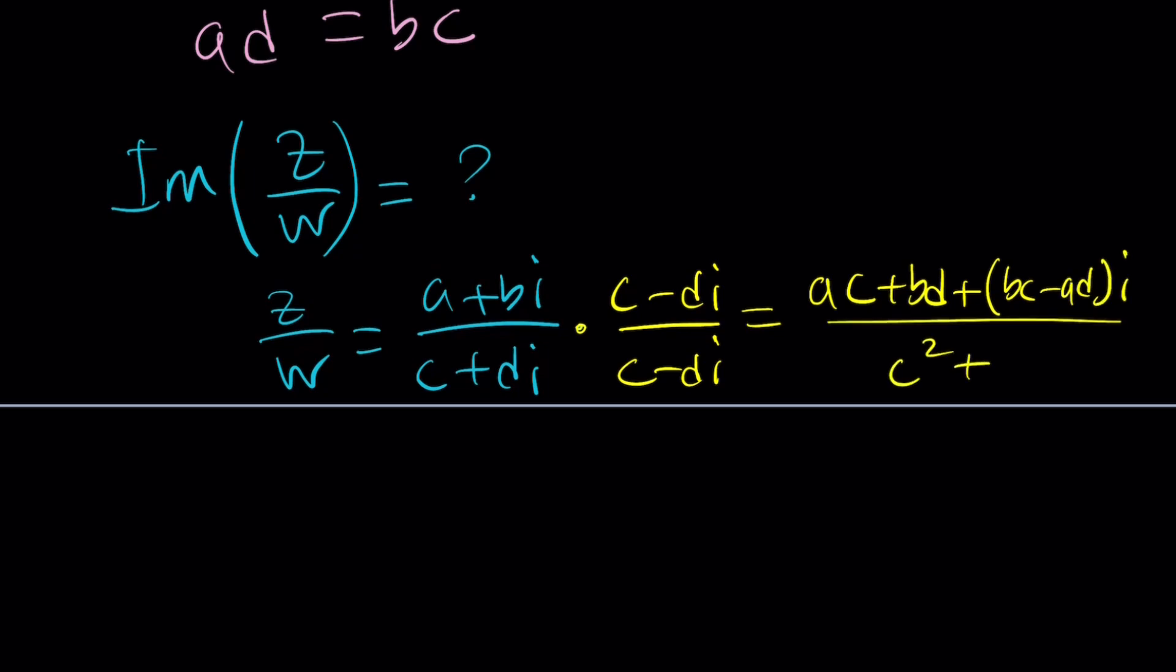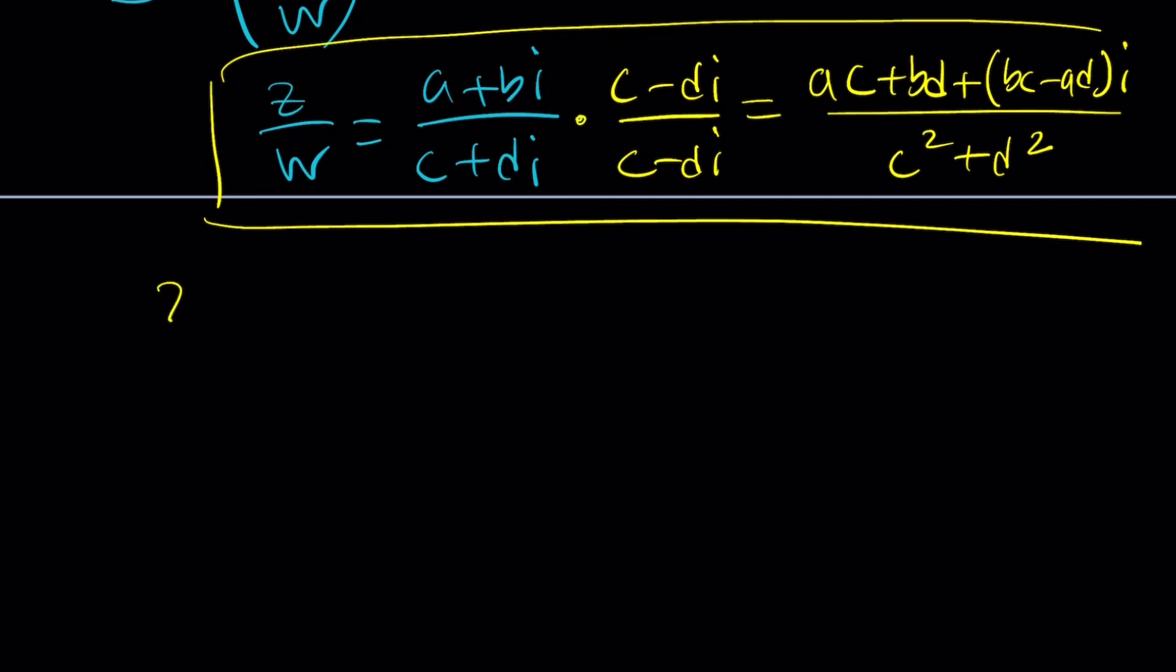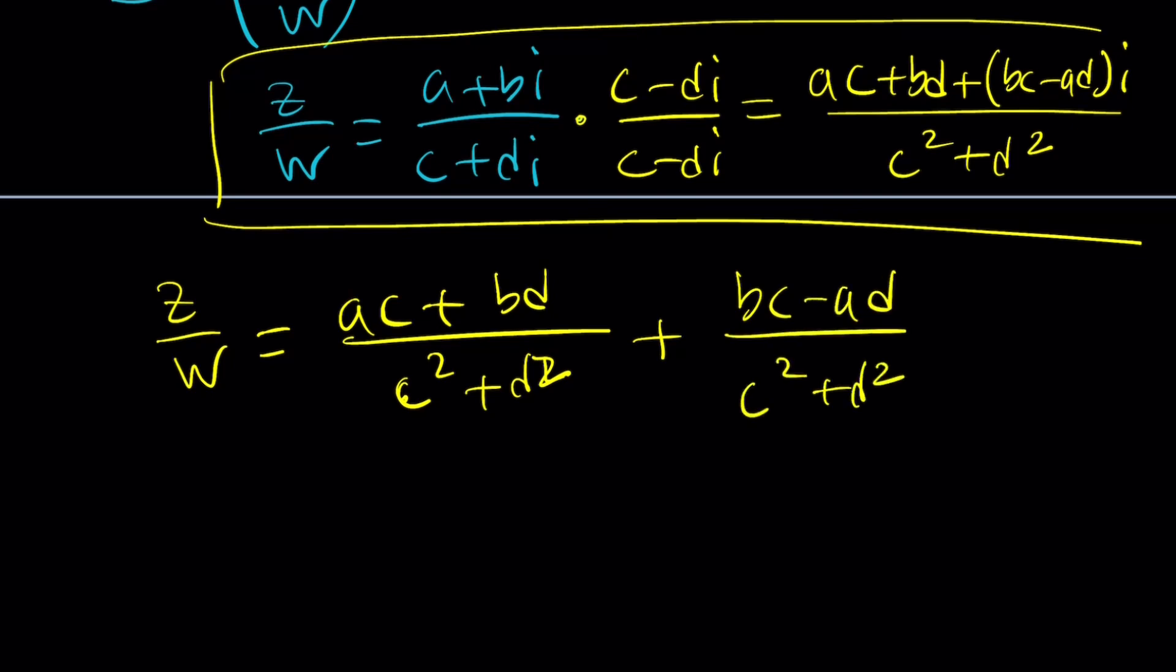And at the bottom, you're going to get difference of two squares. That's Z over W. But what is imaginary part of Z over W? If you separate Z over W into two pieces, the imaginary part is going to be BC minus AD divided by C squared plus D squared. And that's multiplied by I. So the coefficient of I is the imaginary part of Z over W. This is what we're looking for.